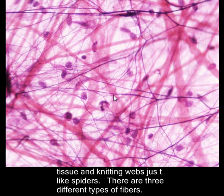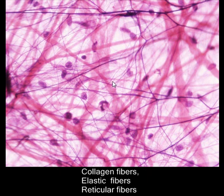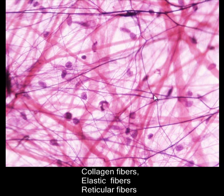There are three different types of fibers: collagen fibers, elastic fibers, and reticular fibers. The pinkish or reddish thread-looking structures are collagen fibers. These purple-looking threads, which are smaller in diameter compared to collagen fibers, are elastic fibers. Reticular fibers are not visible in this slide.